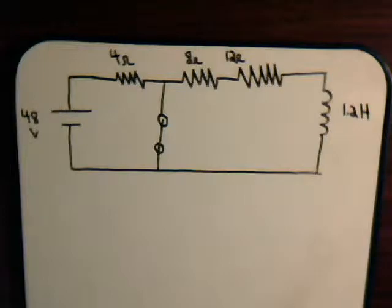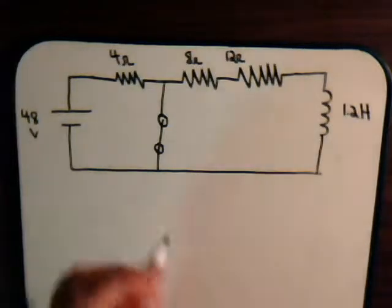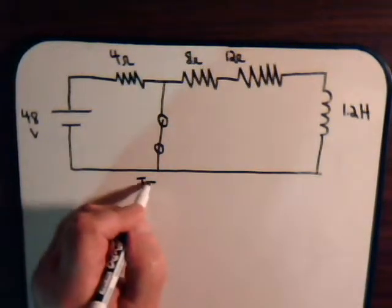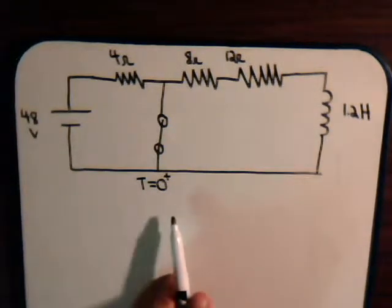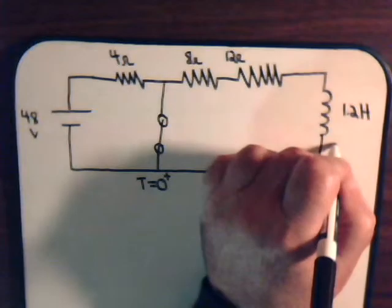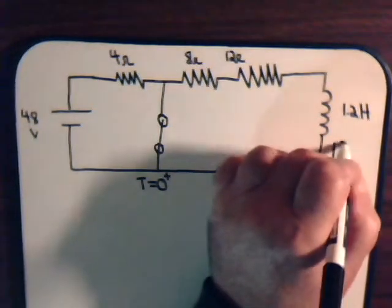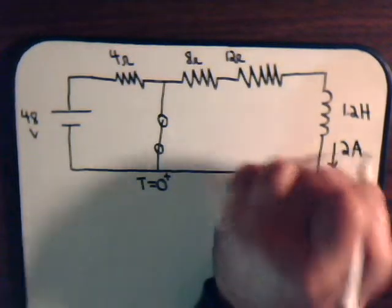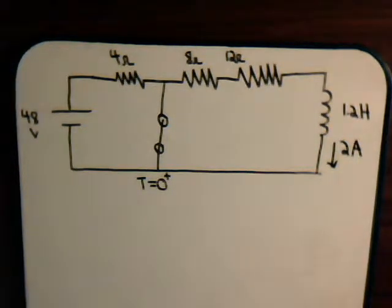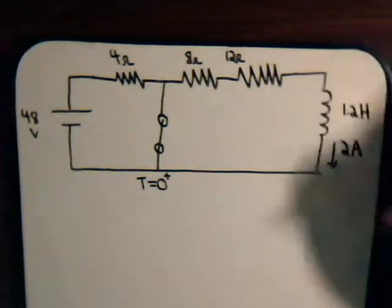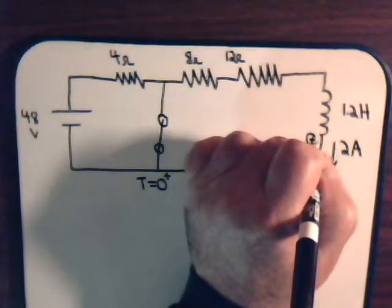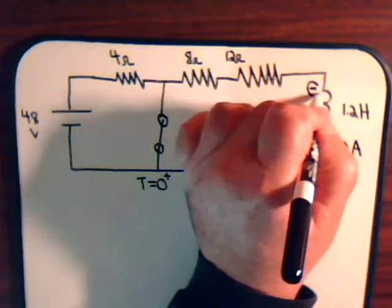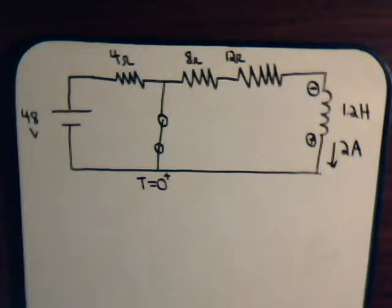Let's consider now what happens immediately after we close the switch. Just at that instant of time, the current in the coil will be 2 amps. Of course it's not going to stay like that. It's going to fall off. When it falls off, the magnetic field that was in the coil collapses and that induces a voltage of this polarity. And again, we've discussed this in more detail in the other videos.